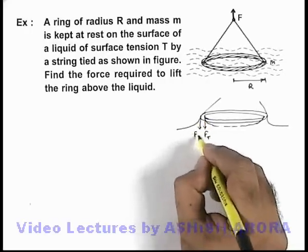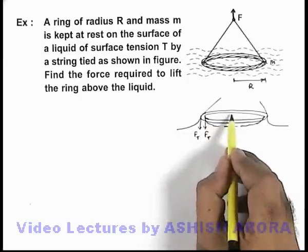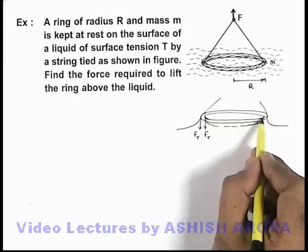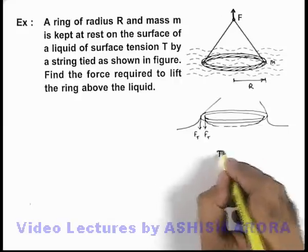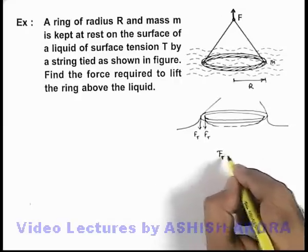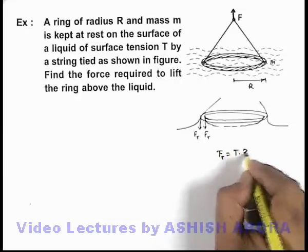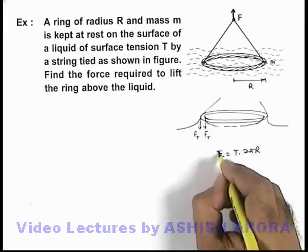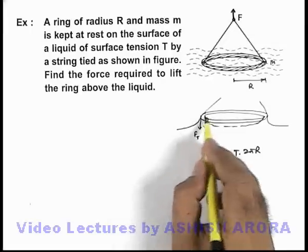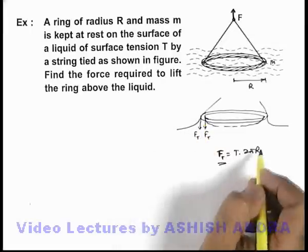And this force of surface tension we can calculate as the length of this line on which the liquid surface is in contact. We can say this force of surface tension Ft can be written as T multiplied by 2πR because the length of this line is 2πR. And on inner and outer both edges, this downward force of surface tension will act.